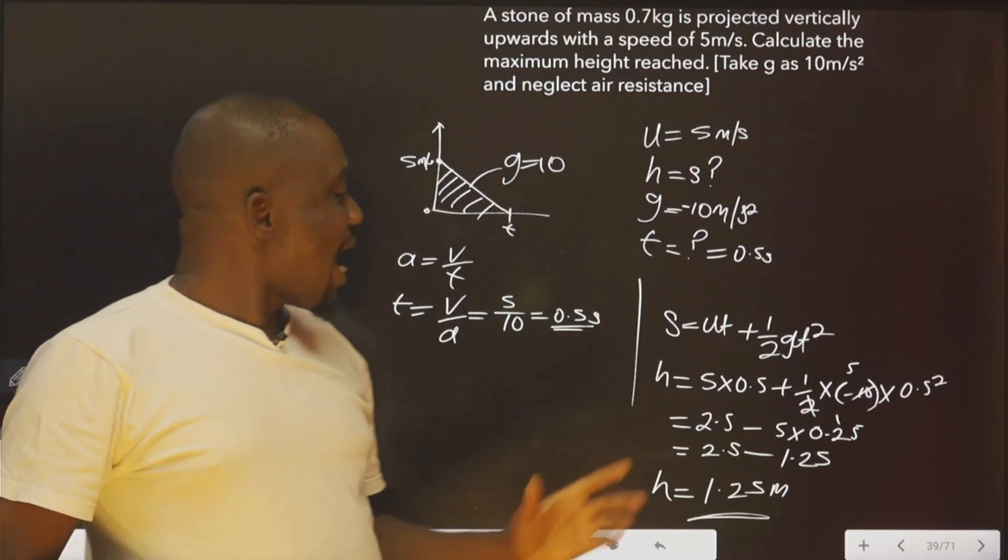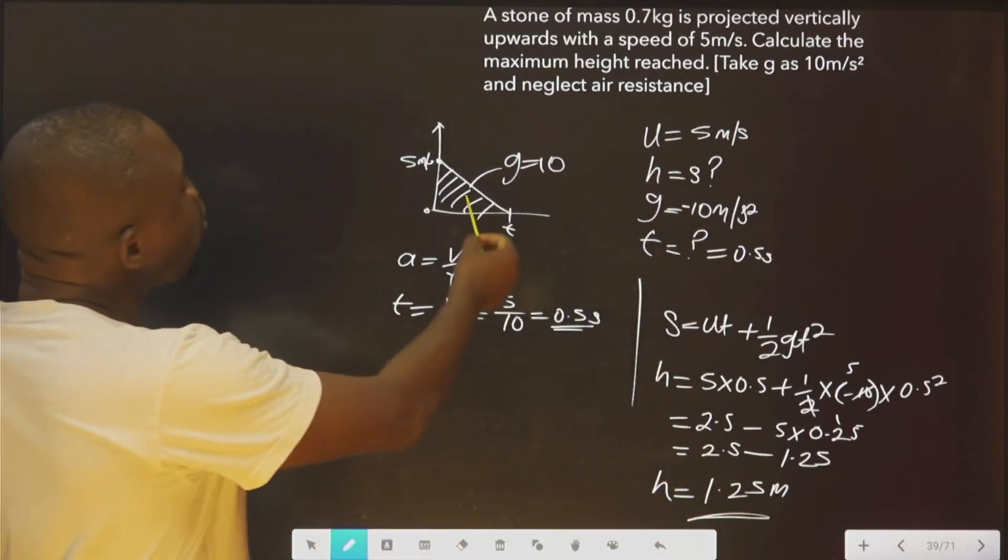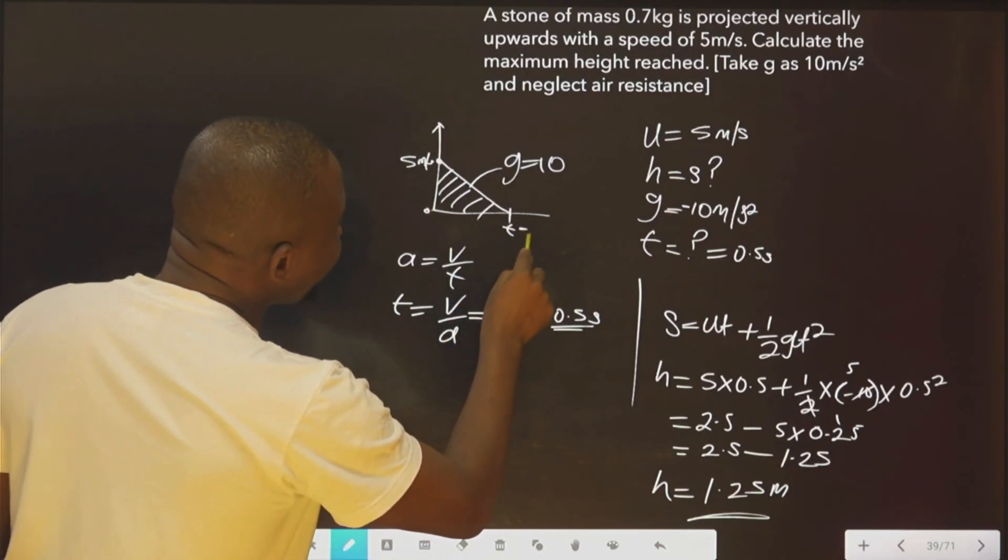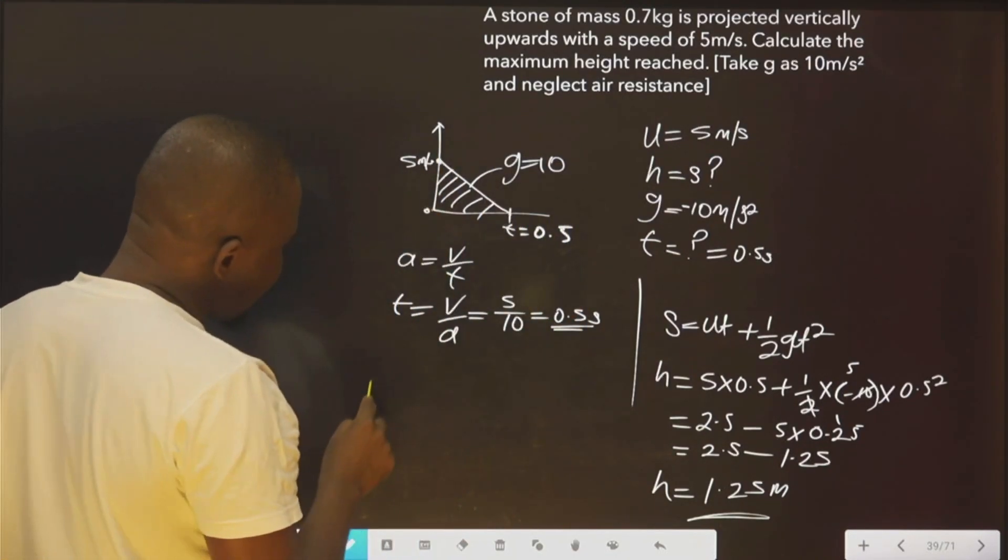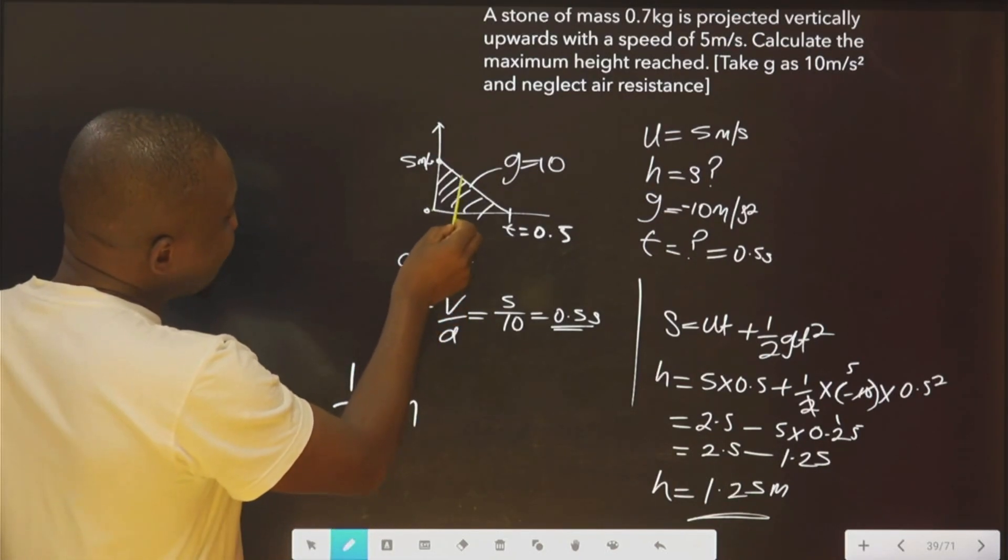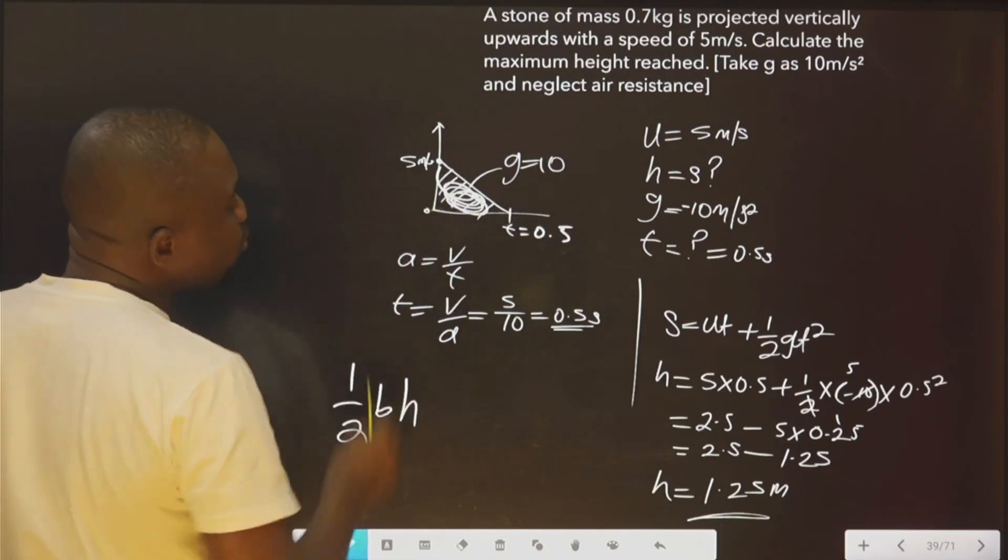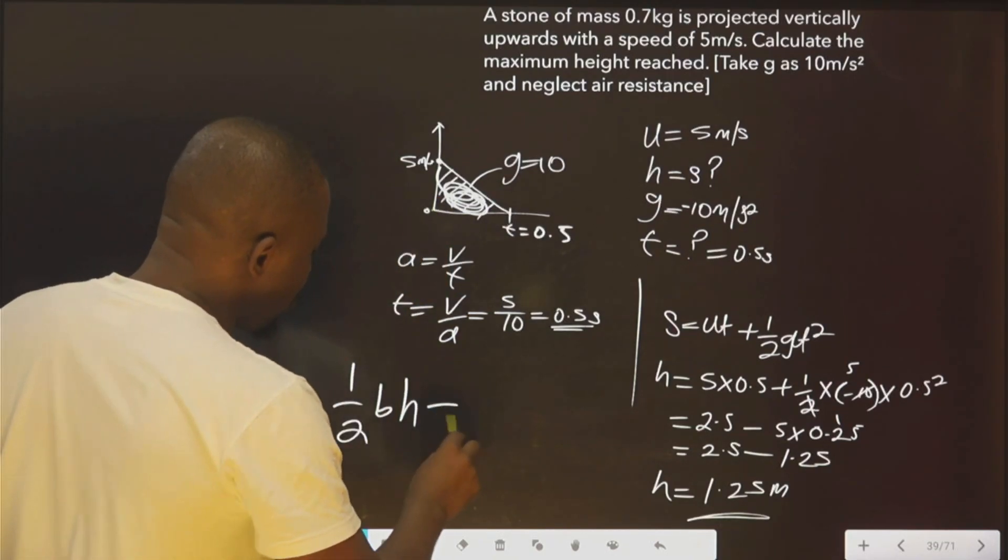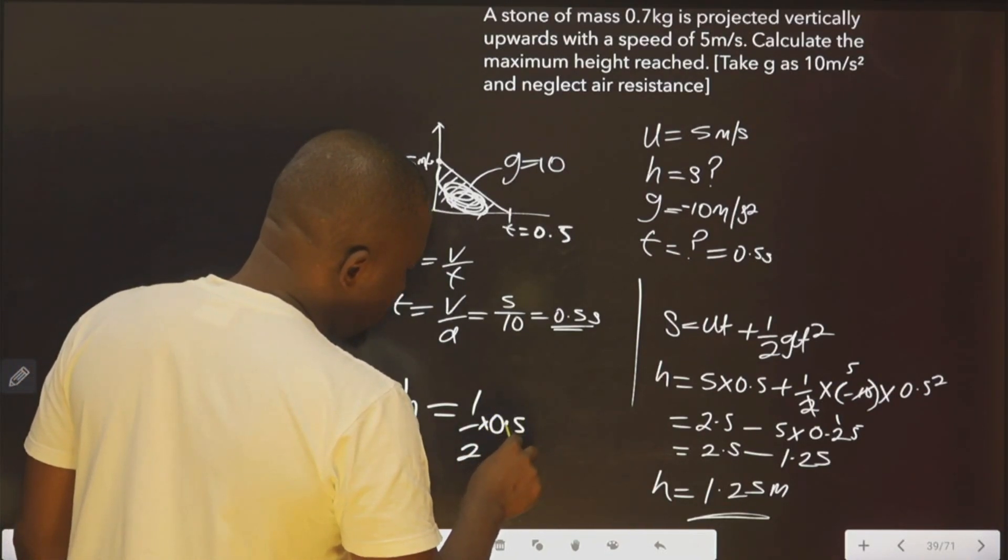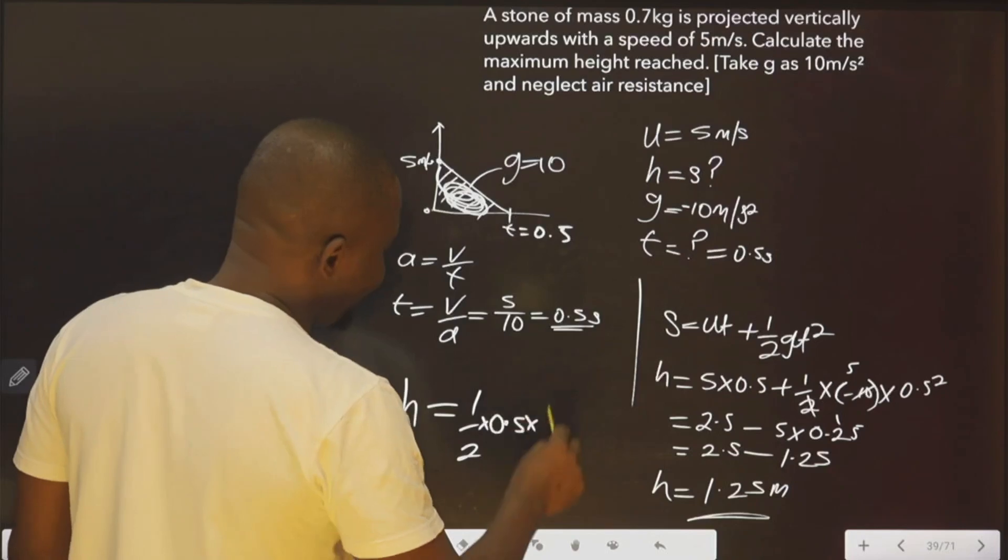Okay? As I said, you can use this. You can also use the area of this triangle. We already know that this is 0.5, right? We can use this area of this height. Because this is what? A triangle. You agree with me here? The base here is 0.5 while the height is 5.